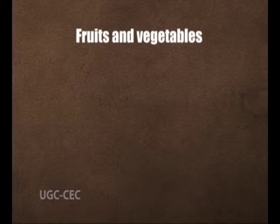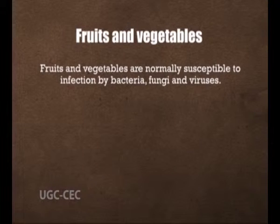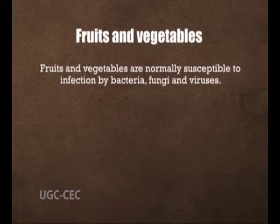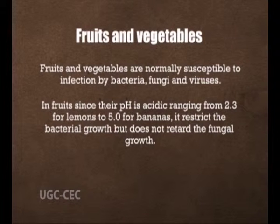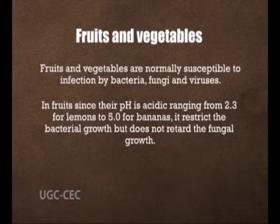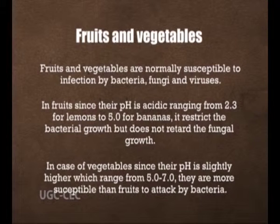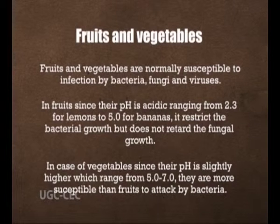Fruits and vegetables are normally susceptible to infection by bacteria, fungi and viruses. In fruits, since their pH is acidic — ranging from 2.3 for lemons to 5 for bananas — it restricts bacterial growth but does not retard fungal growth. In vegetables, since their pH is slightly higher, ranging from 5 to 7, they are more susceptible than fruits to attack by bacteria.